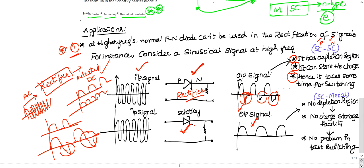The Schottky diode works perfectly at both low and high frequencies with no glitches, because there is no depletion region — a depletion region can only form between semiconductor and semiconductor, not between semiconductor and metal. With no depletion region, there is no charge storage, so no extra switching time is wasted, and the diode switches directly and immediately.